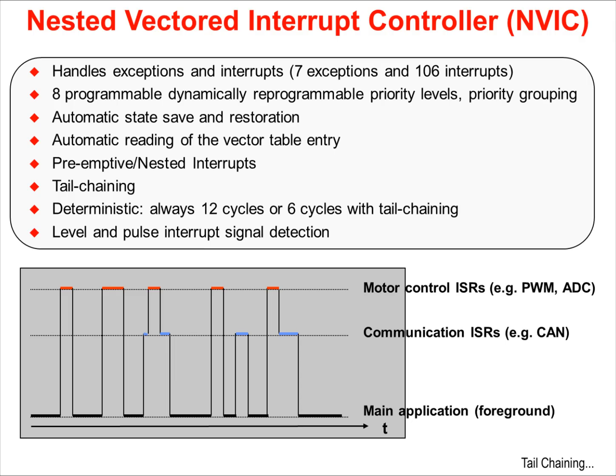The nested vectored interrupt controller, or NVIC, is tightly coupled to the central processing unit. It handles all the exceptions and interrupts that come into the CPU. There are 8 programmable priority levels and priority grouping. In most microcontroller interrupt vector tables, the priority levels for each peripheral are set by the manufacturer and you have no input into what they are. That's not the case on this device — you can reprogram the priorities as you like.